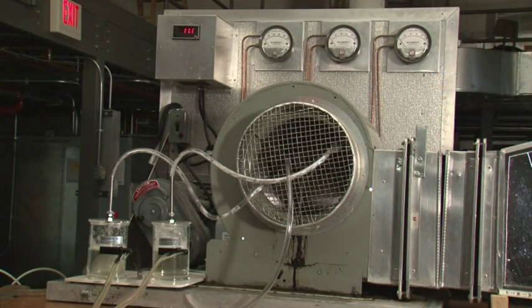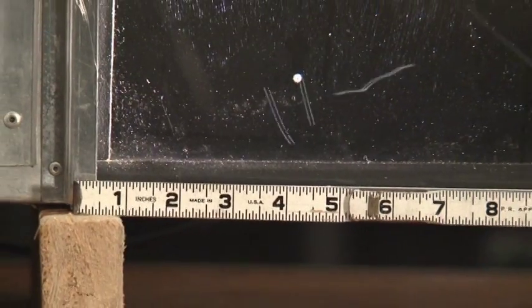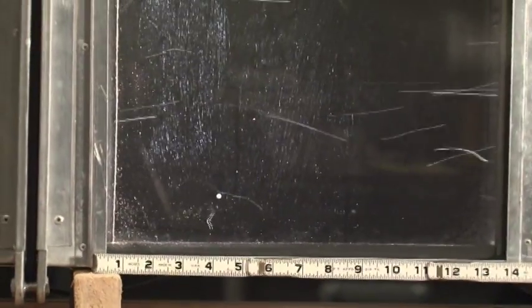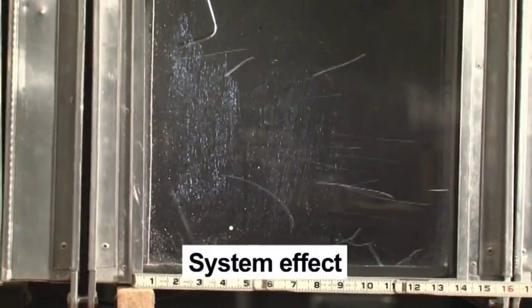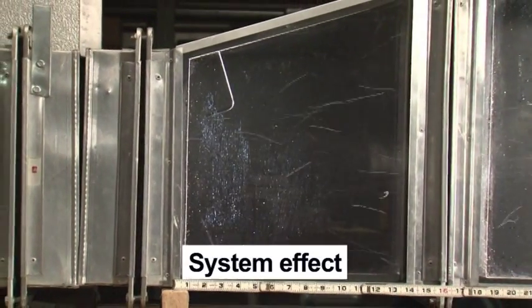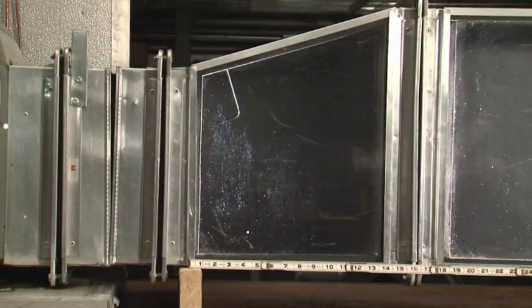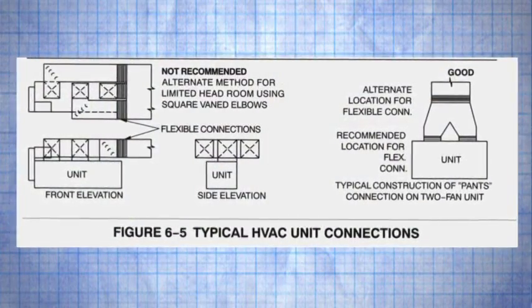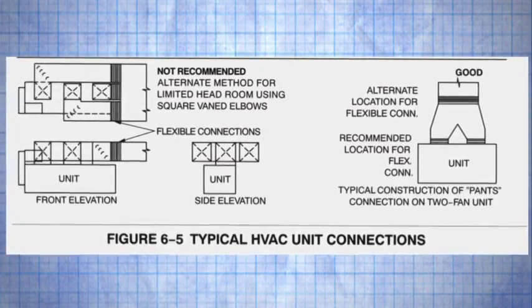Now let's begin our trip down the bubble machine's duct system. This first turbulence is near the discharge of the fan where the bubbles are moving erratically. This illustrates a phenomenon called system effect near the fan — an undesirable pressure loss that cannot be accurately calculated and is often caused by trying to make turns too quickly near the fan. Mechanical rooms that are too small are often the culprit.